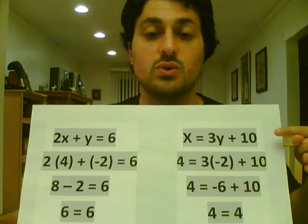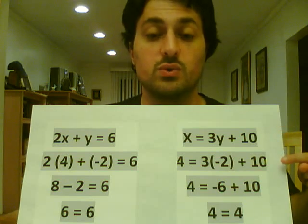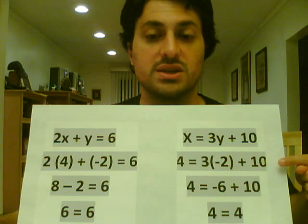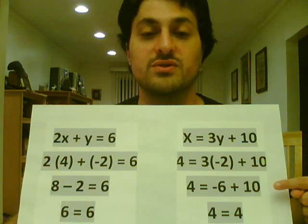And our second one was x equals 3y plus 10, which now becomes 4 equals 3 times negative 2 plus 10. Or 4 equals negative 6 plus 10. Or 4 equals 4.